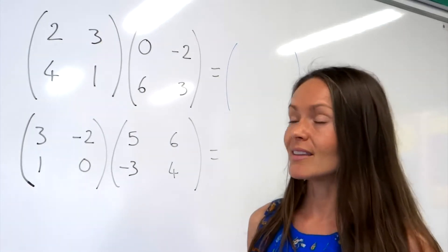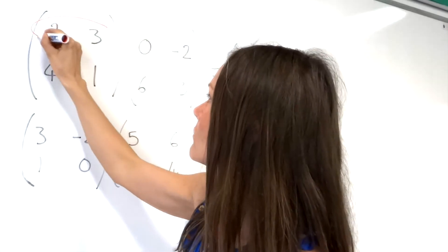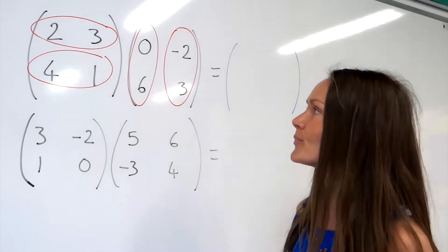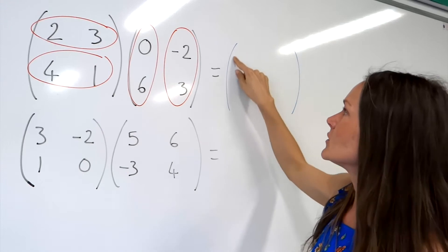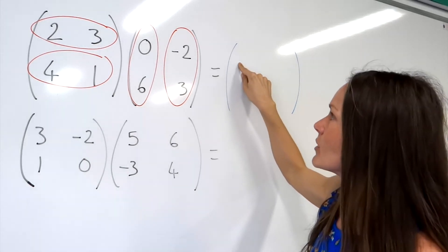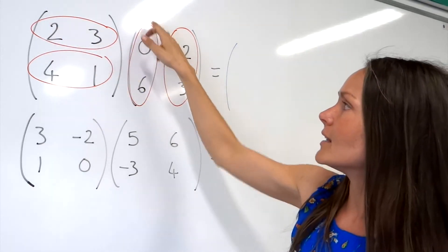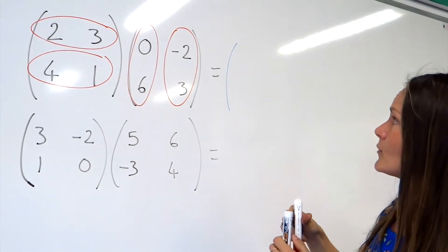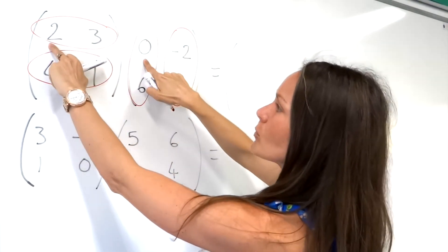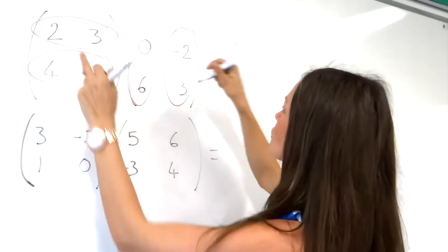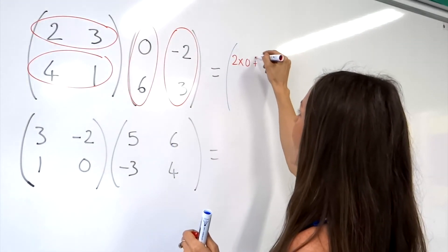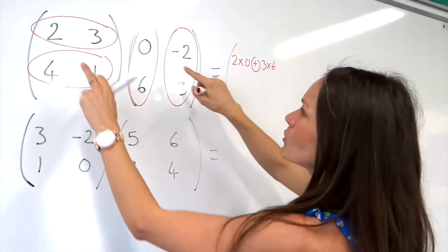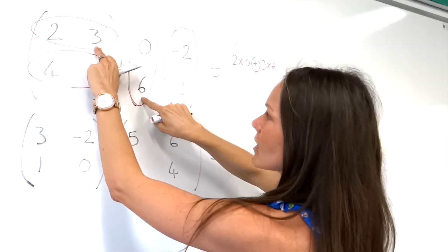Before I start multiplying these matrices together, I'm just going to draw rows around the first matrix and columns around the next one. To find the top left element — the top left number in our answer matrix — I have to use the top row and the left column. I'm going to be multiplying and adding these numbers together. So to find the top left one, I multiply these two numbers: 2 multiplied by 0, and then add 3 multiplied by 6. So I'm doing 2 times 0 plus 3 times 6.